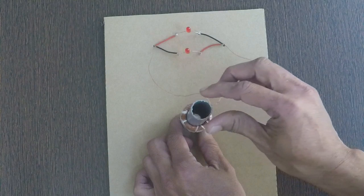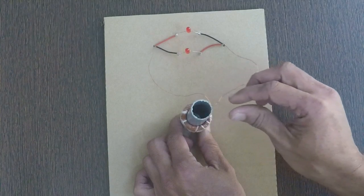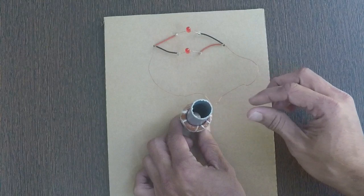With this activity, change in magnetic field and its effect on the direction of current in the solenoid could be observed.